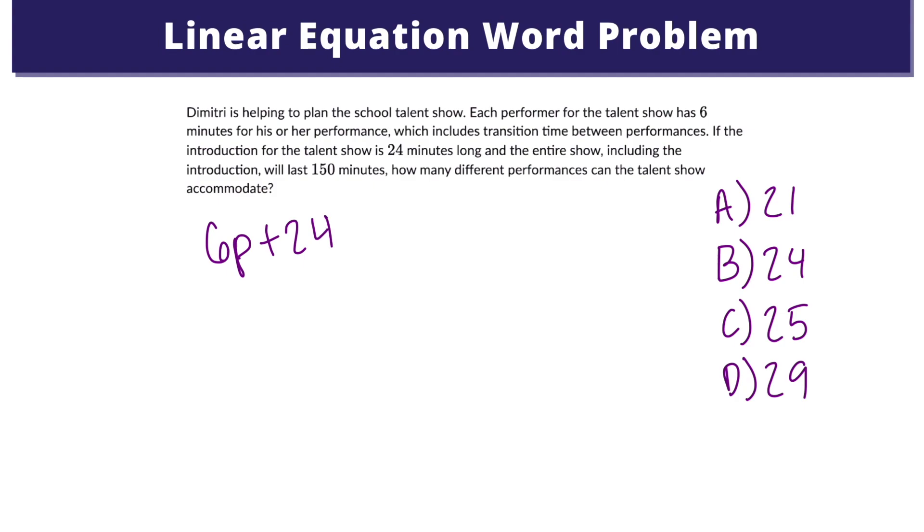Now, since we know that the talent show is 150 minutes long, we can write the equation 6p plus 24 equals 150 to model the number of performances that the talent show can accommodate.